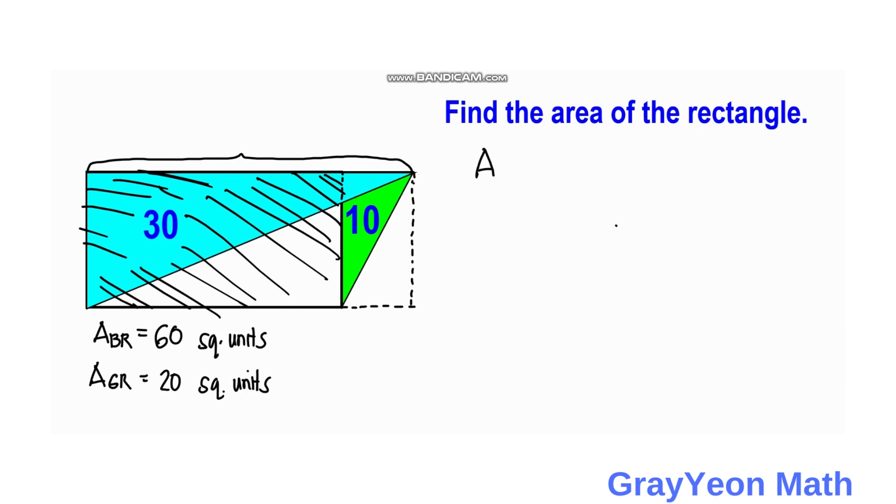Let us call the area of the shaded region as area shaded, equal to the area of the bigger rectangle, or the blue rectangle, minus the area of the green rectangle. And we have 60 minus 20, so area shaded is equal to 40 square units, and that is our answer.